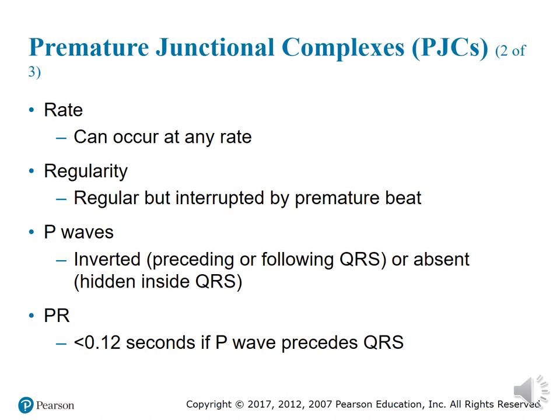If the underlying rhythm starts as a normal sinus rhythm, that is considered the underlying rhythm. P waves may occur before, during, or after the QRS; if visible, the P wave is inverted in leads II, III, and AVF. If a P wave occurs before the QRS, the PR interval will usually be 0.12 seconds or less. If no P wave precedes the QRS, there is no PR interval. QRS duration should be less than or equal to 0.12 seconds unless abnormally conducted.